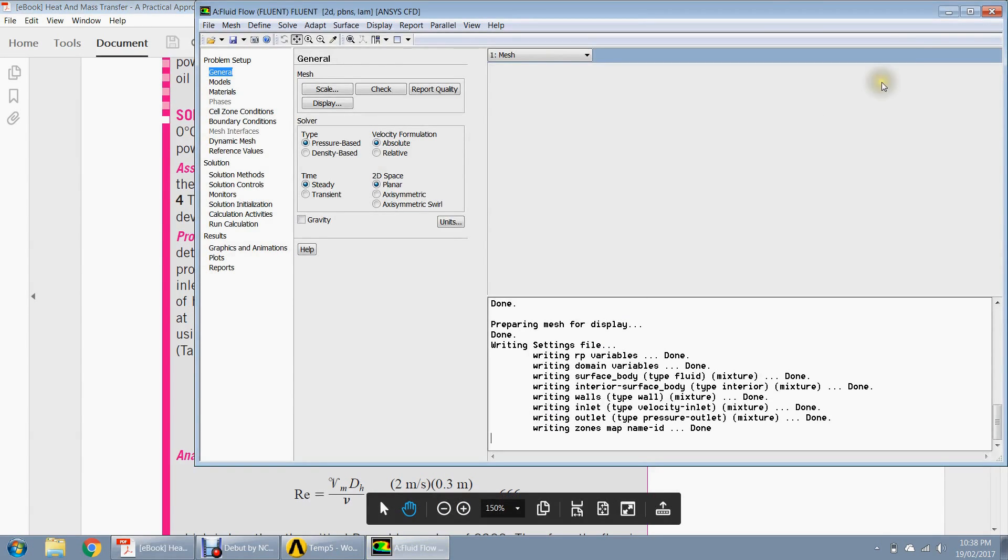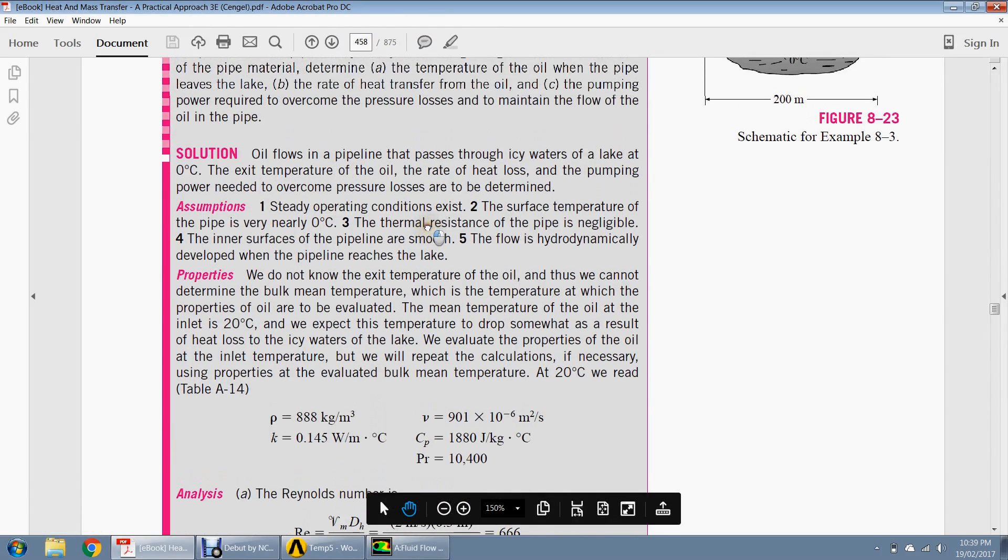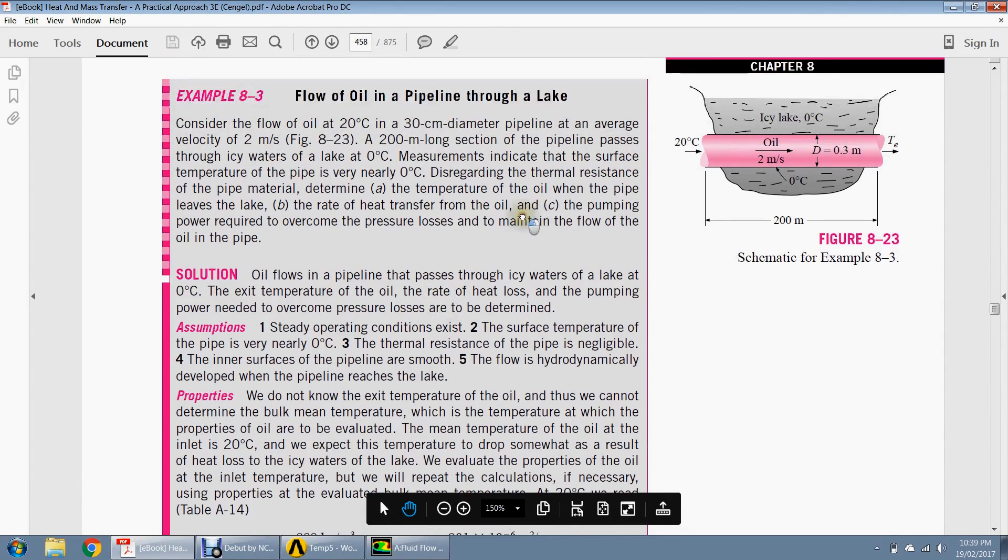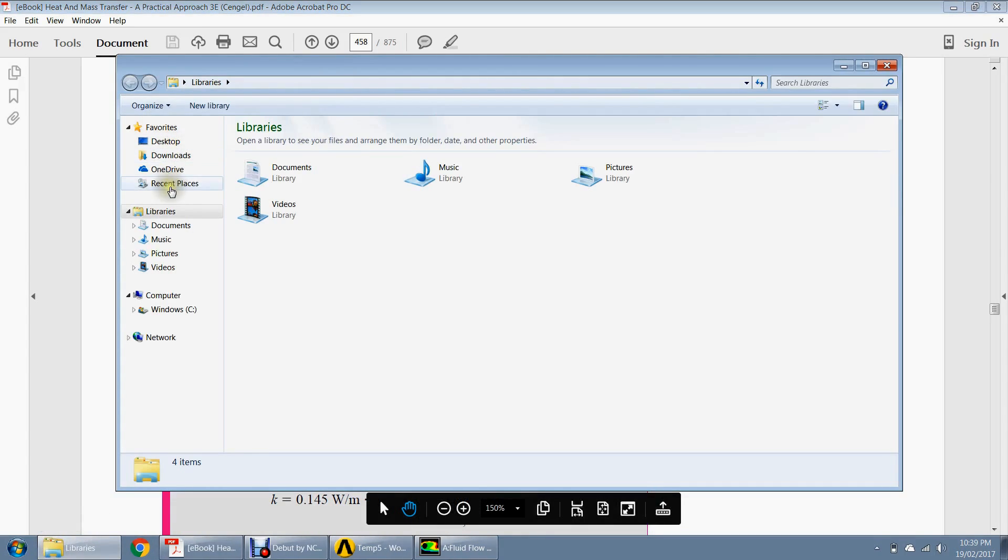So thermal entry length depends on the Reynolds number, Prandtl number, while the hydrodynamic doesn't depend on the Prandtl number. It only depends on the Reynolds number. It's still going on. Maybe I should have kept the mesh a bit smaller. I've actually already simulated this case, but with a relatively coarser mesh, so maybe I'll just use the parameters from there.